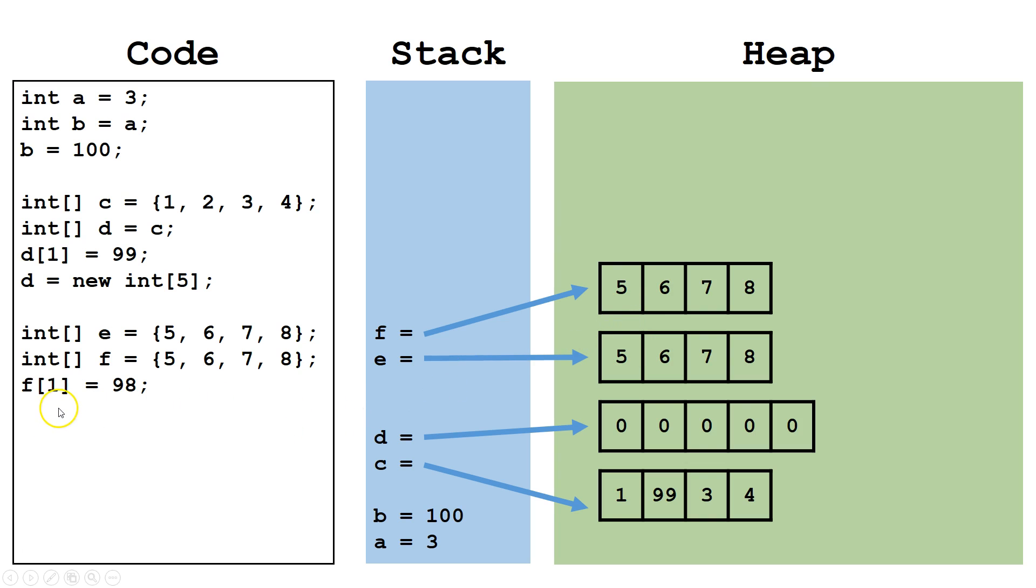When we change the value in index 1 of the object F is pointing at to 98, it only affects F because E and F are pointing at different objects on the heap.